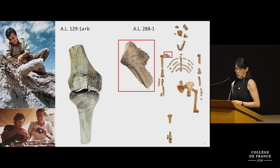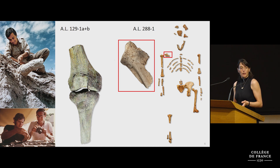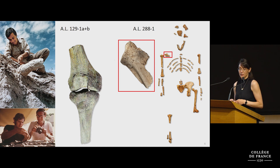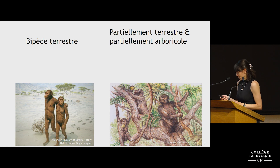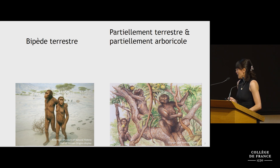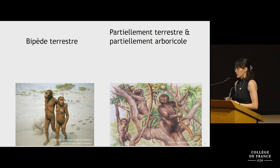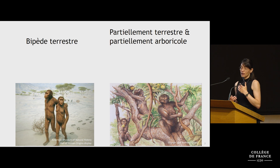Together these specimens really foreshadowed what would become a theme in studies of the australopith post-cranium: a number of derived bipedal features in the lower limb and primitive features concentrated in the upper limb. Paleoanthropologists have had different interpretations of this evidence. At one extreme, researchers envision australopiths as fully terrestrial bipeds; at the other are those who envision them as bipedal on the ground but still partially living in the trees.